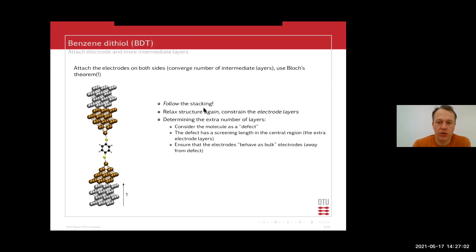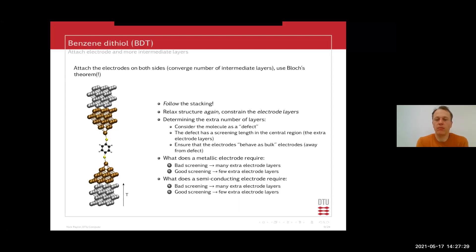So here, this is where it gets important. You need to ensure that your screening length is sufficiently small such that your electrodes out here, the gray atoms area, are really, truly bulk. All parts of your electrodes. So here, there are just two small questions. I'll give you 45 seconds to think about. So what does a metallic electrode require? And what does a semiconducting electrode require? I'll count down 45 seconds.